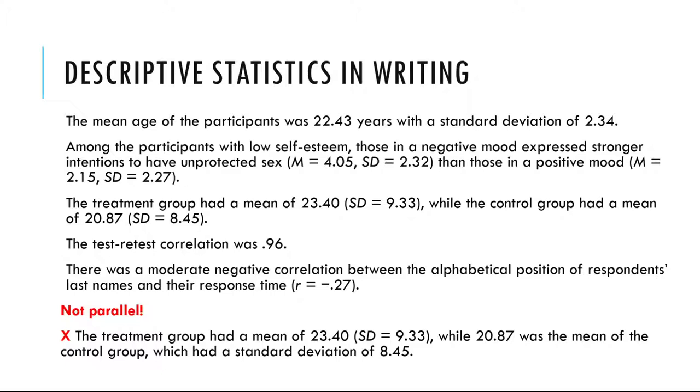The treatment group had a mean of 23.4, standard deviation equal to 9.33, while the control group had a mean of 20.87, standard deviation equal to 8.45. The test-retest correlation was 0.96. There was a moderate negative correlation between the alphabetical position of respondents' last names and their response time, with R equal to negative 0.27.